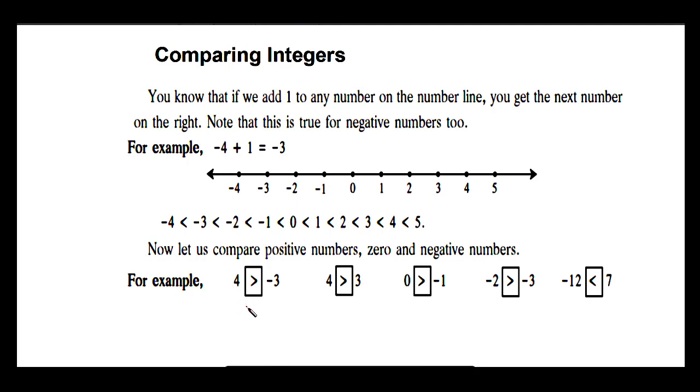For example, 4 and negative 3: 4 is greater than negative 3. 4 and 3: 4 is greater than 3. 0 and negative 1: 0 is greater than negative 1. Negative 2 and negative 3: negative 2 is greater than negative 3.